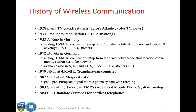The first frequency modulation was invented by Armstrong in 1933. In 1958 and 1972, Germany had A-nets and B-nets — early instances of wireless communication networks. In 1979, Scandinavian countries had a system called NMT. In 1982, the GSM era started, which is the earliest technology that later laid the foundation of mobile phones. GSM was in Europe and a similar system called AMPS started in America in 1983. In 1984, the CT1 standard for cordless telephones came up in Europe.